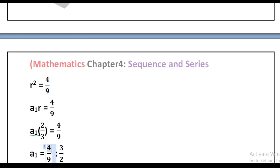Now using a₂ = 4/9, we know a₂ = a₁·r. So a₁·r = 4/9. Substituting the value of r as 2/3: a₁ multiplied by 2/3 is equal to 4/9.